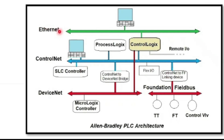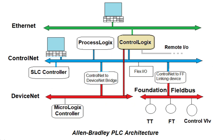With NetLinx we can define three types of networks: Ethernet, ControlNet, and DeviceNet. The ControlNet controller can communicate via a backplane communication interface module to monitor and control IOs on ControlNet, DeviceNet, and Ethernet. ControlNet is an open, high-speed network used for transferring data and provides real-time control and messaging services for peer communication.